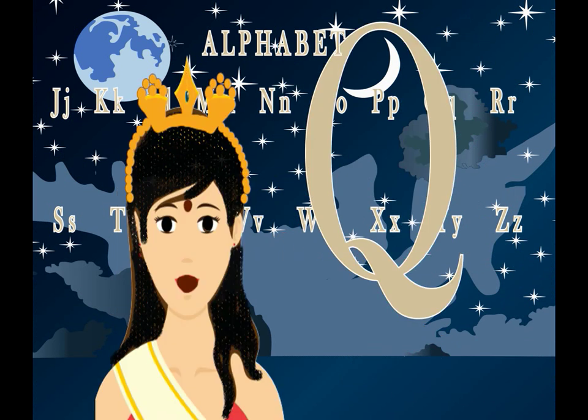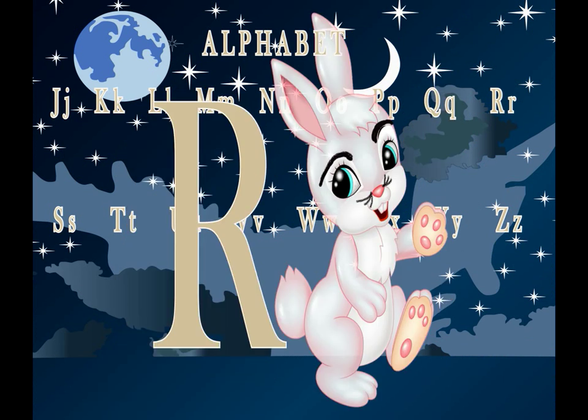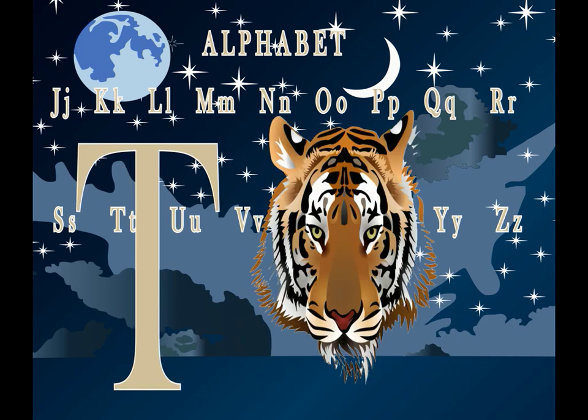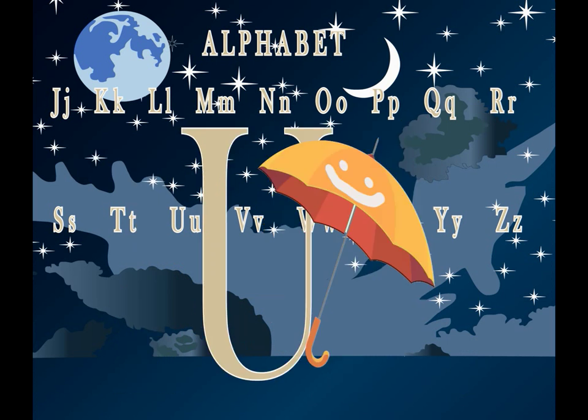Q for queen. R for rabbit. R for rose. S for sheep. S for sparrow. T for tiger. U for umbrella.